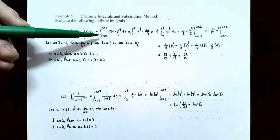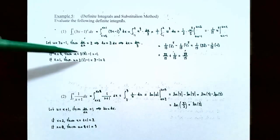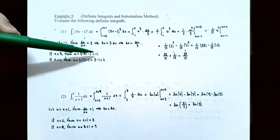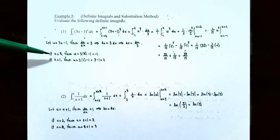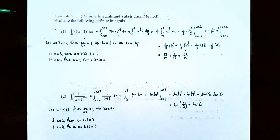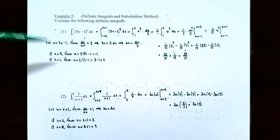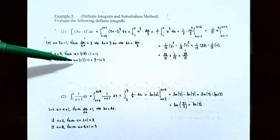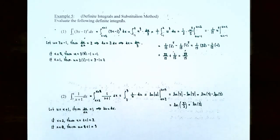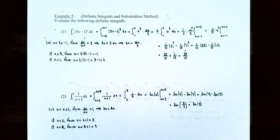The lower limit of integration was x equals 0. Plugging x equals 0 into the substitution u equals 3x minus 1 gives u equals 3 times 0 minus 1, or u equals negative 1. So x equals 0 is replaced with u equals negative 1. For the upper limit, x equals 1: plugging in gives u equals 3 times 1 minus 1, which is 3 minus 1, or u equals 2. So the upper limit becomes u equals 2. Now let's change everything in the integral to be in terms of u.